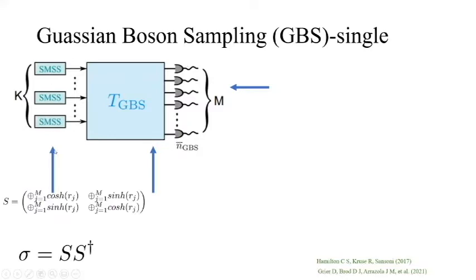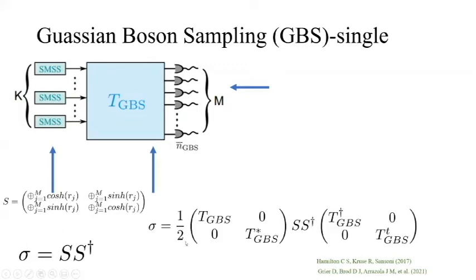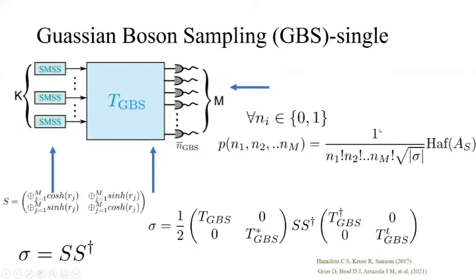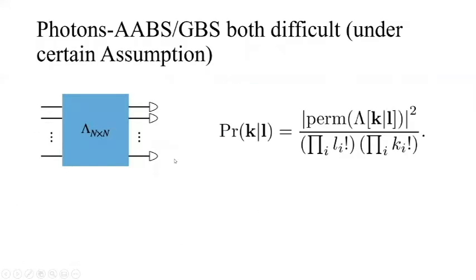Our single mode squeezing gives us these S matrices, and I can form a covariance matrix because it's a Gaussian state. After the linear mode transformation, this is our covariance matrix. After that, we can compute a probability, and the probability corresponds to some matrix function called the Hafnian. This A matrix basically depends on the linear mode transformation and the original squeezing operator.